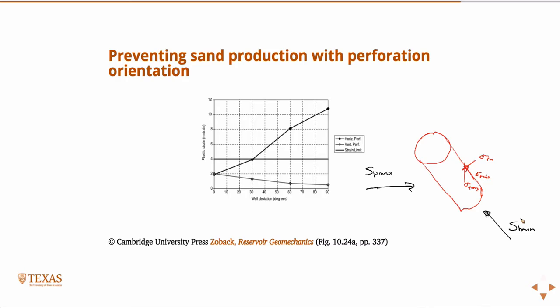That's all handled by automated computations in the computer, but the magnitudes of these different stress components change. If we can avoid it, we wouldn't want to perforate — say in a vertical well — at the azimuth of sh min, where you're going to have breakouts.